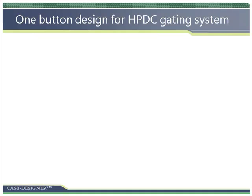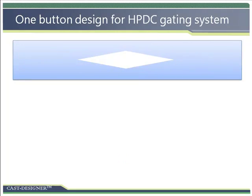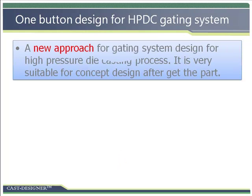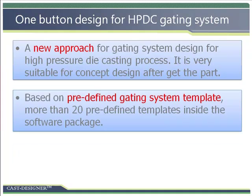One-button design is a new approach for gating system design in the high-pressure die casting process. It is very suitable for concept design after getting the part, since it is very easy to use and very fast. One-button design is based on predefined gating system templates.